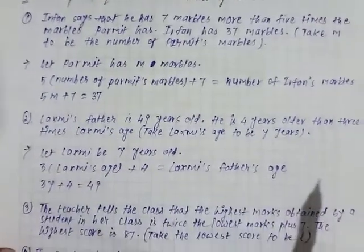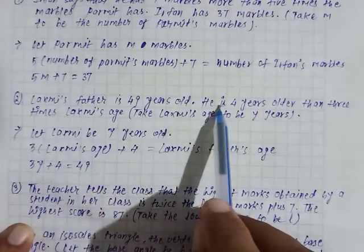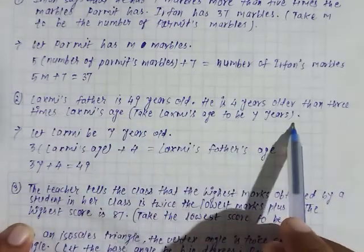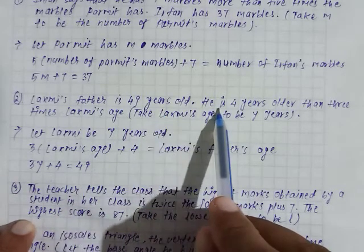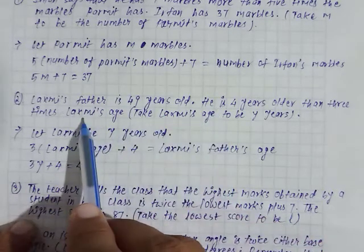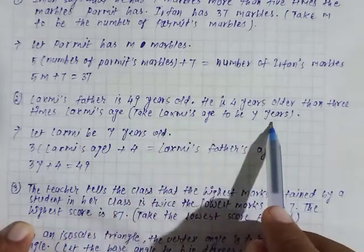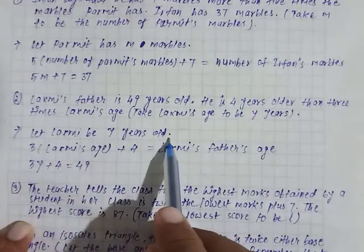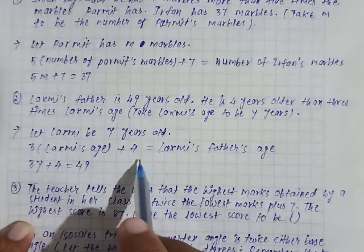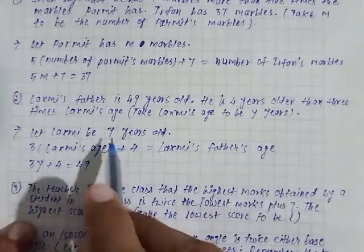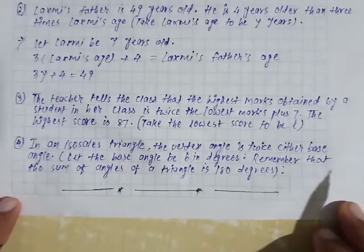Come to question number 2. Laxmi's father is 49 years old. He is 4 years older than three times Laxmi's age. Take Laxmi's age to be y years. So it becomes 3y plus 4 is equal to 49.